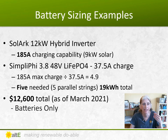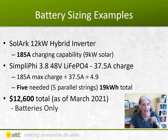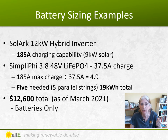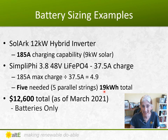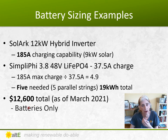The final example uses Simplify batteries — those 3.8 kilowatt hour, 48-volt batteries with a maximum 37.5 amp charge rate. With 185 amps divided by 37.5, we need five parallel batteries. Since these are already 48-volt batteries, no series connections are needed — just five in parallel. That gives us 19 kilowatt hours total, at a cost of $12,600 as of March 2021.